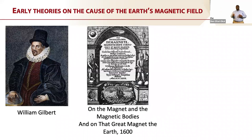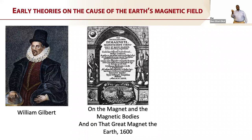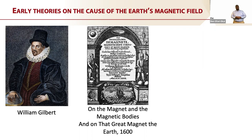The first ideas about the origins of the Earth's magnetic field came from around 1600. William Gilbert — who is also from Colchester — wrote a book called 'On the Magnet and the Magnetic Bodies and that Great Magnet the Earth.' He supposed the Earth itself was just a giant magnetic ball, in the same way that you could pick up an iron rock and it would be magnetic. In 1600, you didn't have any real reason to assume that wasn't going to be true — we knew that some materials were magnetic, some weren't, and that you could use a magnetic material to find other magnetic materials. That theory persisted for a while.